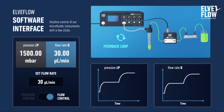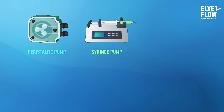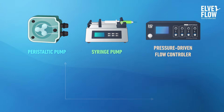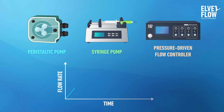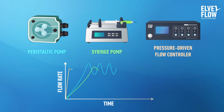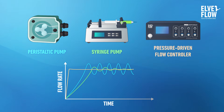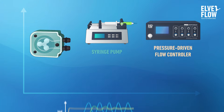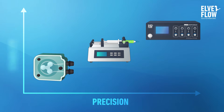Both peristaltic and syringe pumps are easy to use — they push liquids by a mechanical action. Yet this mechanical movement creates bumps and pulses, limiting performances in terms of response time and flow stability. In a pressure-driven flow control system, the liquid is pushed by a gas in a smoother action, leading to a pulseless flow and a higher flow control accuracy.